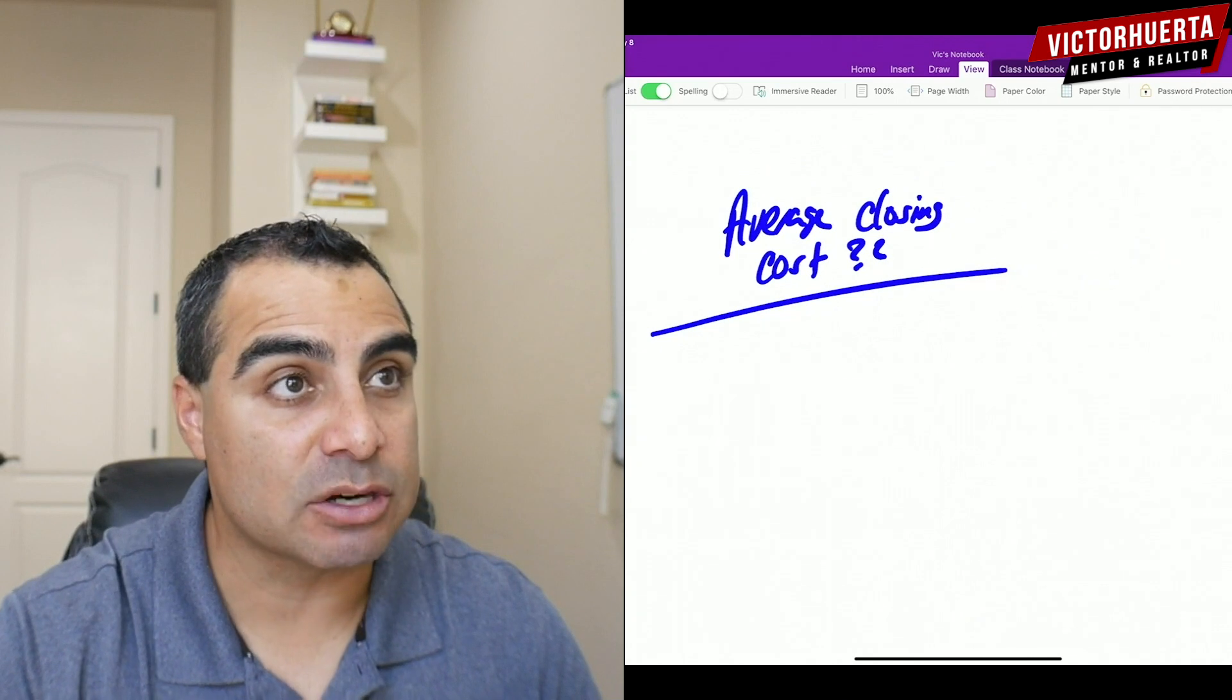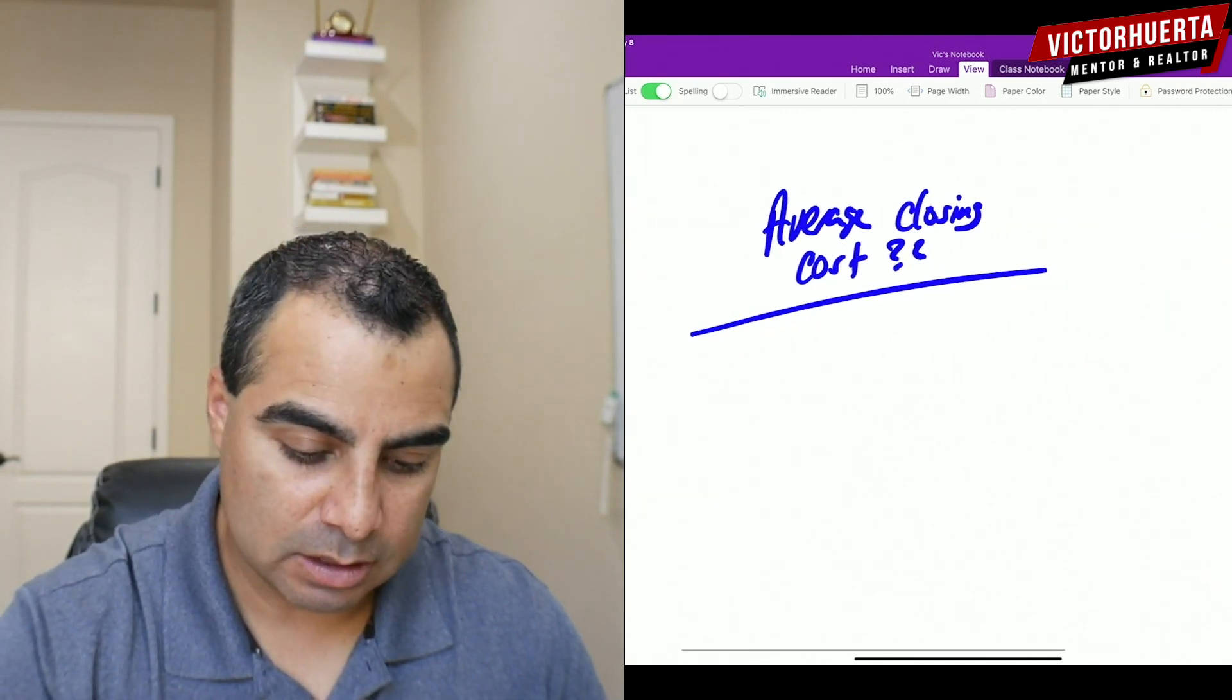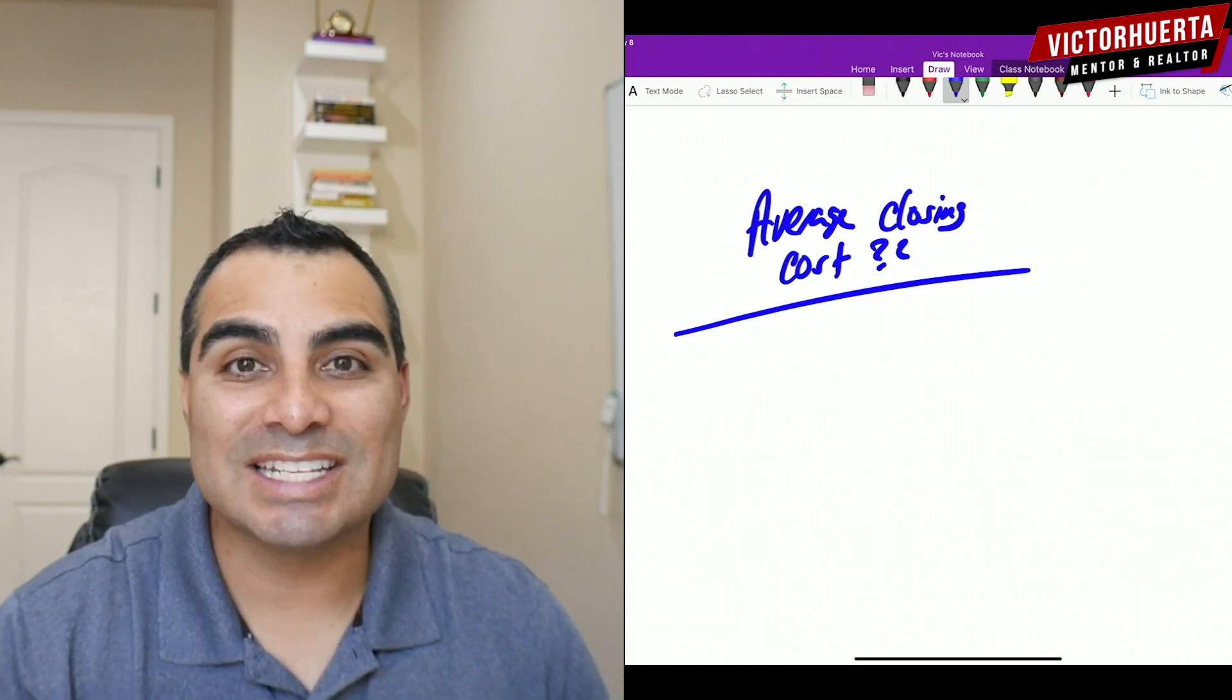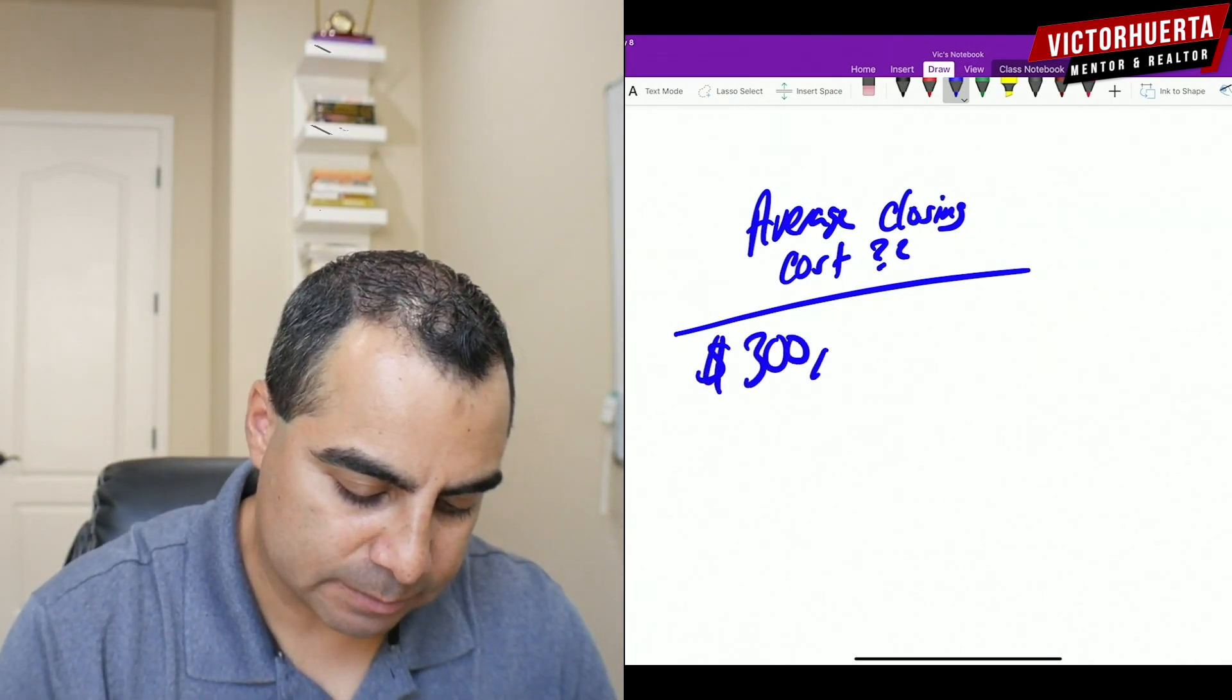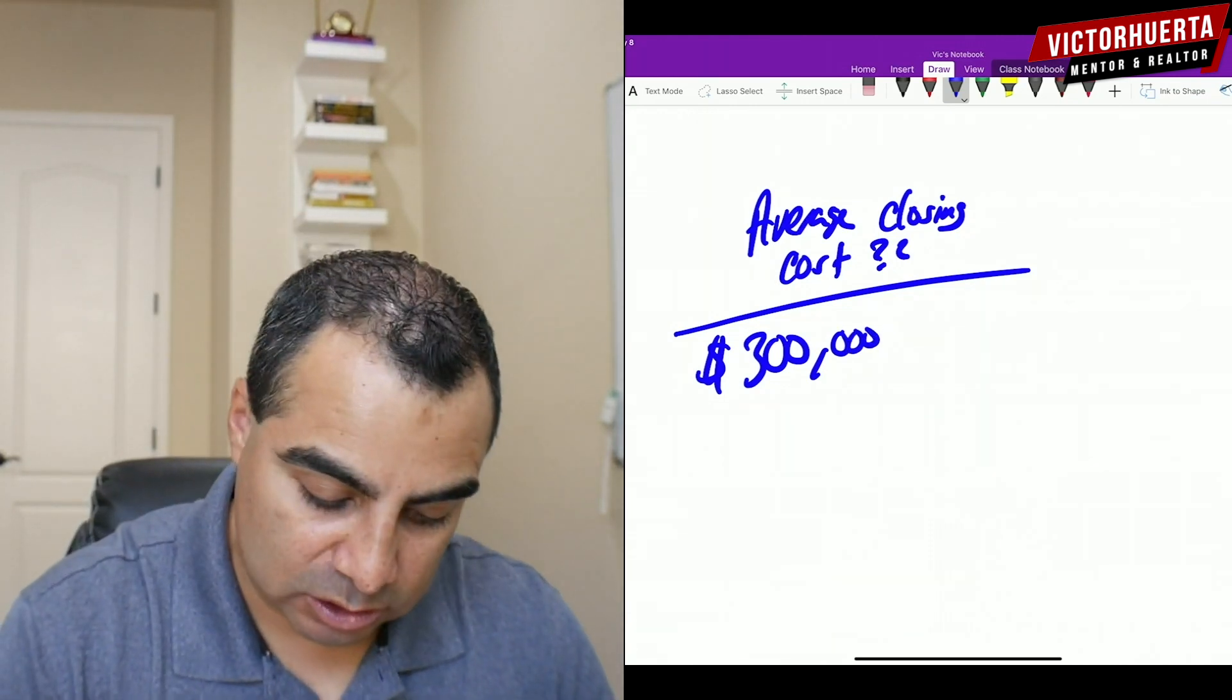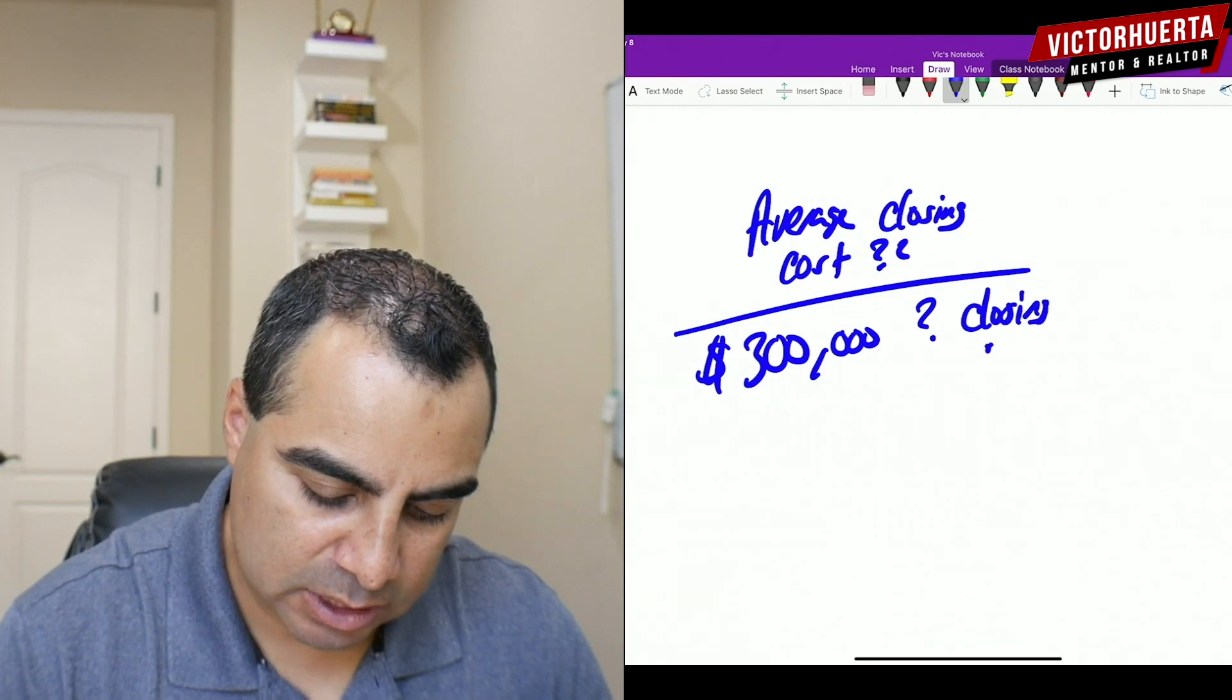Okay, let me shrink this up and make sure I'm still in the frame. Let me go this way. Alright, here we go. So let's just say you're buying a house at $300,000, and you want to know what the closing cost is. Closing costs.